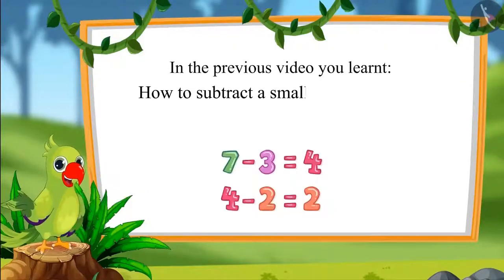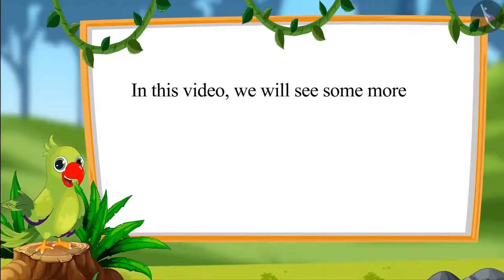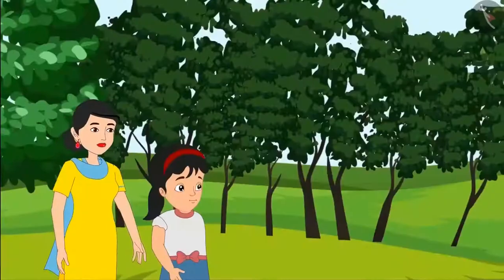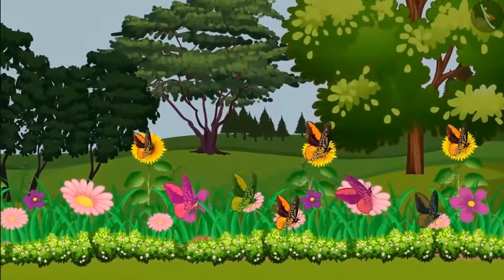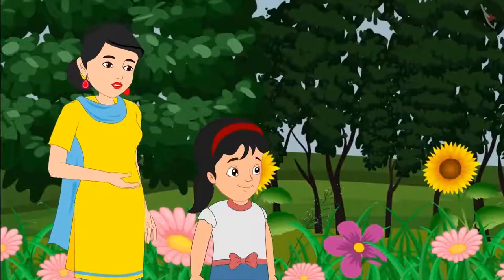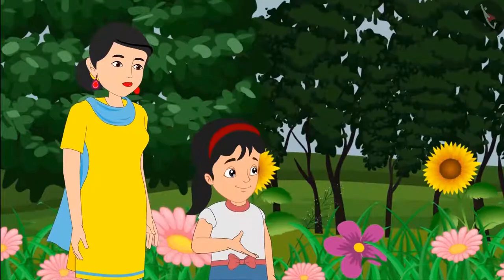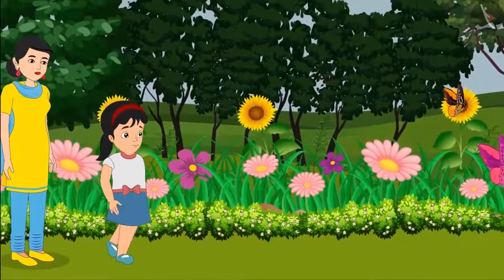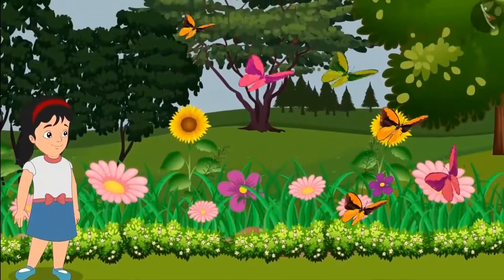How to subtract a small number from a large number in a systematic way. In this video, we will see some more interesting examples of writing the subtraction of two numbers in a systematic way. Pinky is strolling in the garden with her mother. She sees some butterflies on a bunch of flowers.